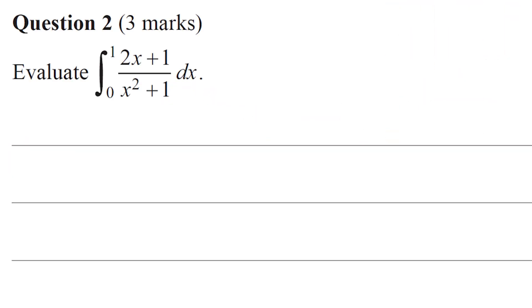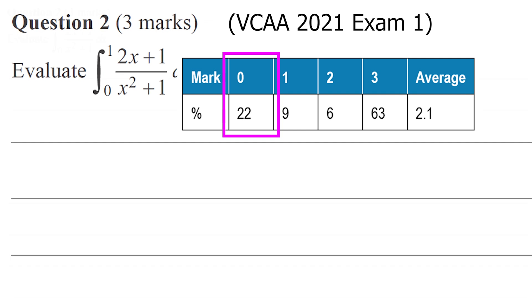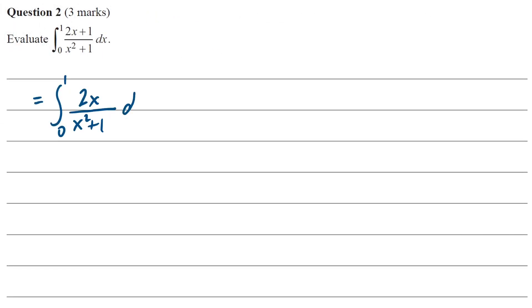This is one of the more straightforward integrals we've seen in specialist maths. Over 60% of students got full marks, three out of three on this question, but over 20% got zero out of three. What they probably missed was that we have to write this fraction as the sum of two fractions like this. Once we do that, it's reasonably straightforward.